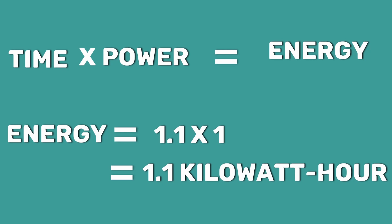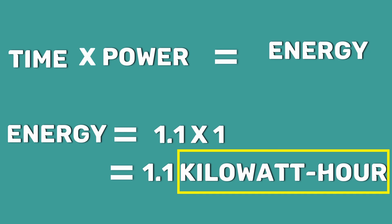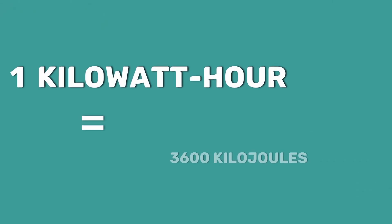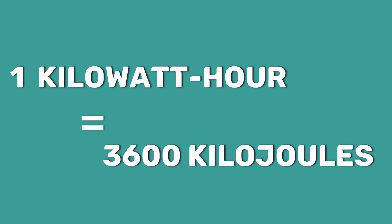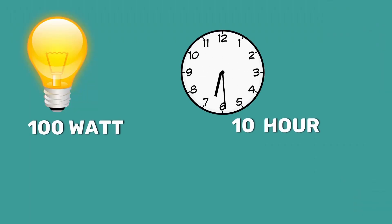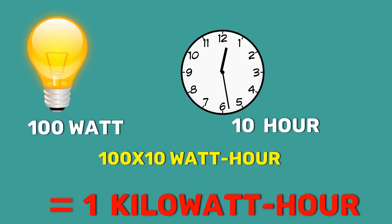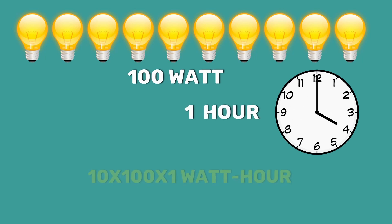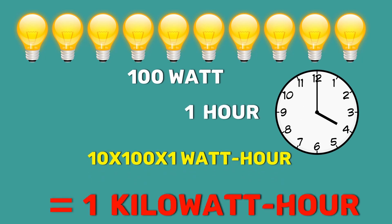Here the energy is expressed in Kilowatt hours instead of Joules, because electrical energy is normally sold to consumers in Kilowatt hours. That is, the commercial unit of electrical energy is Kilowatt hour. 1 Kilowatt hour is equal to 3600 KiloJoules. For example, a 100 Watt bulb operating for 10 hours consumes 1 Kilowatt hour of electrical energy. Similarly, 10 bulbs of 100 Watts operating for 1 hour also consume the same 1 Kilowatt hour of electrical energy.